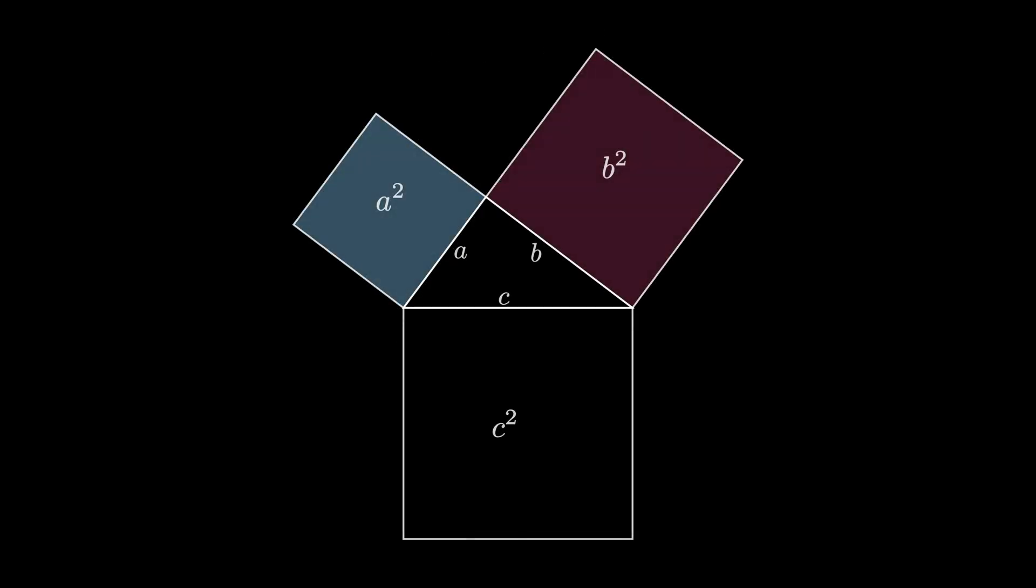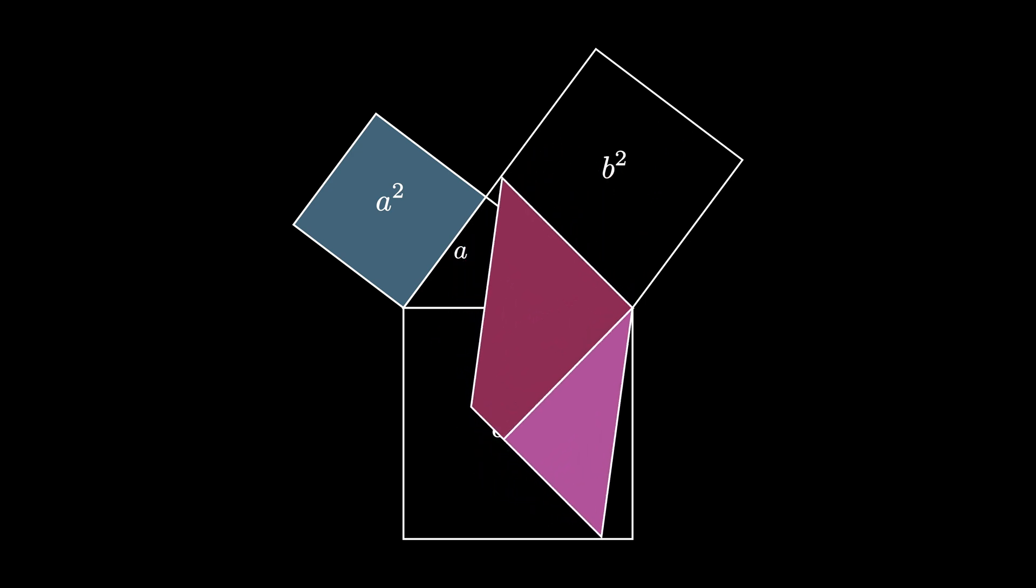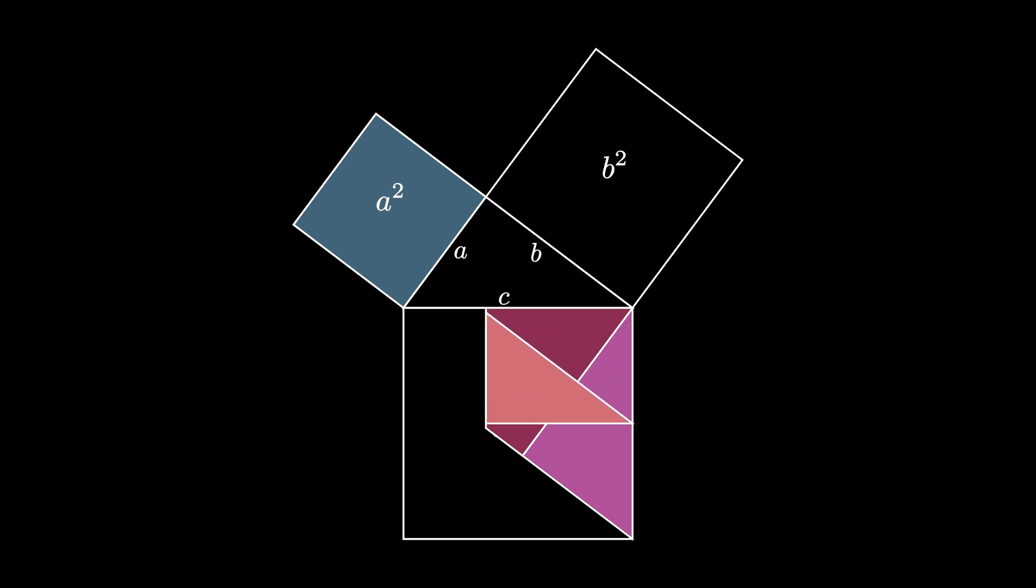The shearing and rotation proof also suggests a dissection proof of the Pythagorean Theorem. We can cut the B by B square like this, so that the triangular region matches the original right triangle. We can rotate this shape down, and then use the triangle to cut this region into two shapes, dropping down this top pictured triangle here.